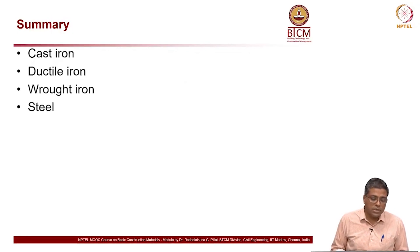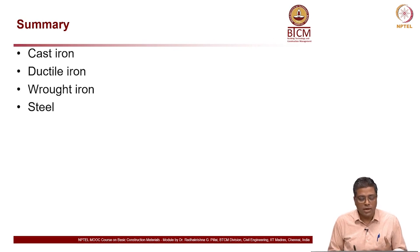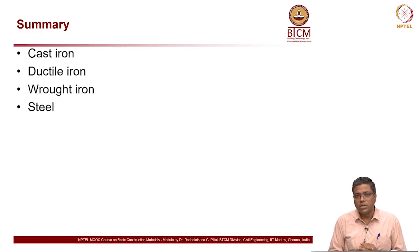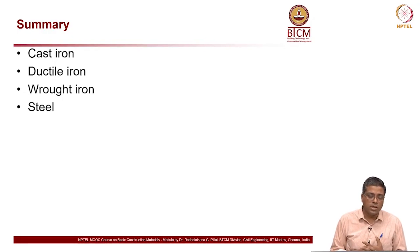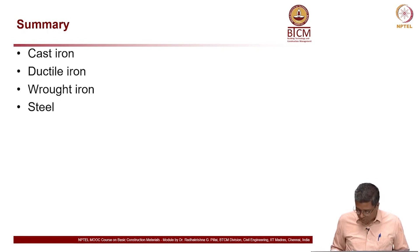To summarize: we looked at how cast iron, ductile iron, wrought iron, and steel are produced in general, what their major properties are, and how carbon content influences ductility, strength, and hardness. With that we will close this lecture.